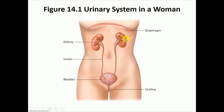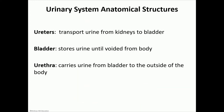A quick review of the urinary system parts: we have the kidneys and ureters, which are bilateral, a single bladder, and a single urethra. The kidneys are the factories that produce urine, while everything else is basically just tubes to transport urine to the bladder where it is stored, and then we urinate through the urethra.